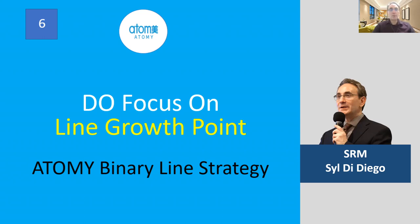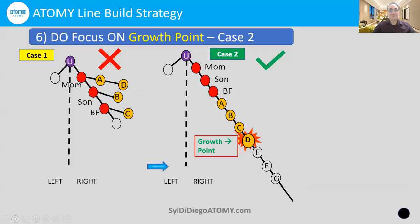Focus on the growth point and anatomy binary line strategy. If you remember, on the left here, case one was the pig club situation, which we want to avoid by all means. So what's the best way to build a line for the benefit of A, B, C, and D?